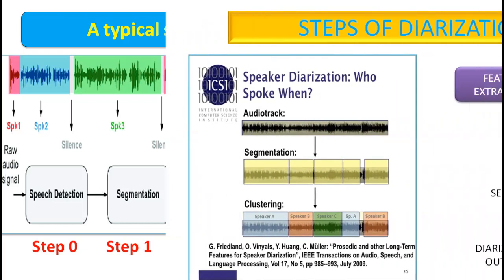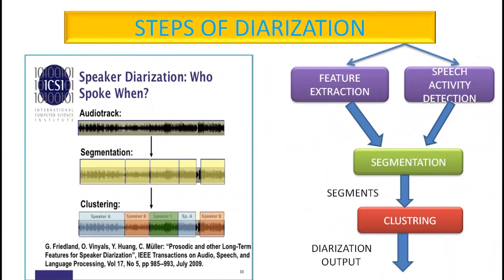Next come the steps of diarization. In these steps, it processes the audio track through segmentation and clustering. Feature extraction and speech activity detection are performed. Speaker diarization answers the question 'who spoke when' for a given conversation in telephone calls, meetings, or broadcast news, without any prior information about the audio or the speakers. A speaker diarization task emerged to optimize audio information retrieval by detecting and tracking speech and speaker information. The feature is extracted, speech activity detection is done, and then it is segmented into different parts, as you can see here, and clustering occurs.